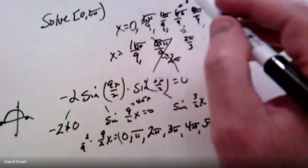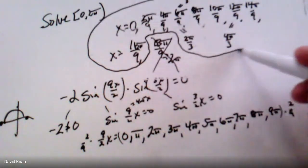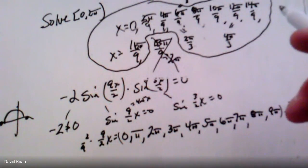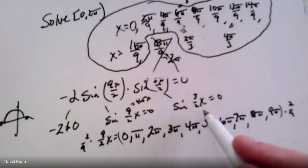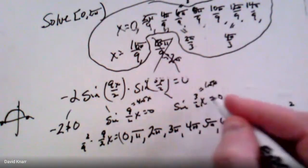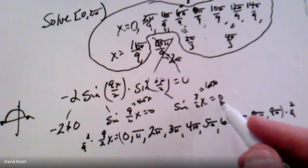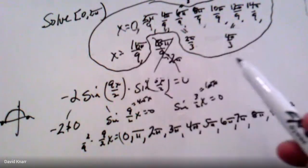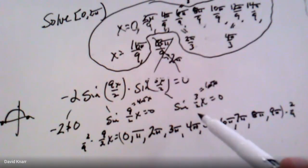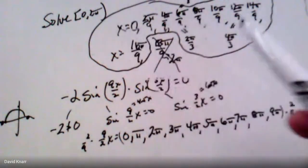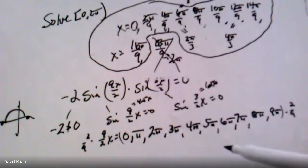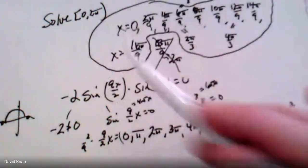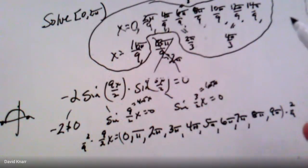We should technically also solve sin(3x/2) = 0, but since 3x/2 means only going 1.5 times around the circle, it just reproduces answers already found — like 0, 2π/3, 4π/3 — so it gives nothing extra. There's no reason to solve it again. Those are all the answers using your sum-to-product and product-to-sum formulas. Thanks for clicking — like and subscribe!